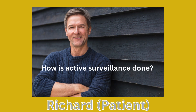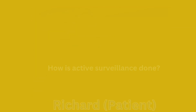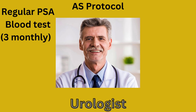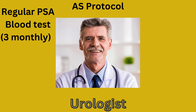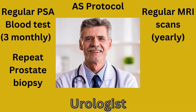How is active surveillance done? There are many active surveillance protocols, but most involve doing a regular PSA blood test, for example every three months, as well as regular MRI scans of the prostate, usually yearly, and a repeat prostate biopsy after one year of the initial diagnosis and every three years thereafter, to ensure that the cancer cells are not becoming more aggressive or the volume of cancer is not becoming larger.